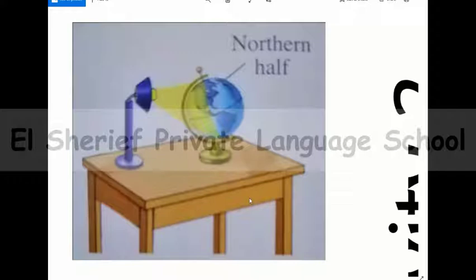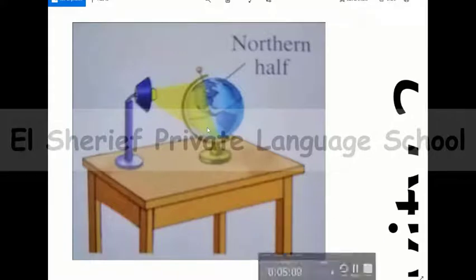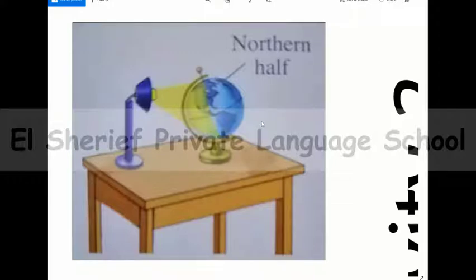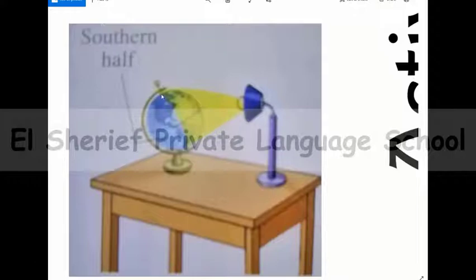We're going to show the sequence of the four seasons. Number one: put a model of the earth on a table where its northern half is inclined towards an electric lamp. As we can see, with the electric lamp, a large part of the northern half of the earth becomes light while a small part of the southern half becomes light — this is summer in the northern half and winter in the southern half.